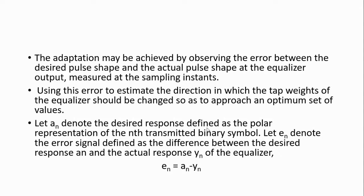A(N) is the desired response, and E(N) is the error signal produced by the equalizer. E(N) is equal to A(N) minus Y(N), where A(N) is the desired response and Y(N) is the actual response of the equalizer. Depending upon the error produced, the direction of the tapped weight will be adjusted.